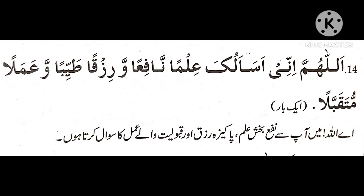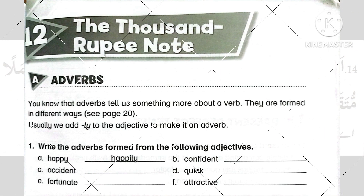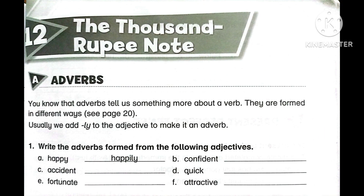Let's start today's lecture with a prayer: Allahumma inni as'aluka ilman nafi'an warizqan tayyiban wa amalan mutaqabbala. This is Unit Number 12, and the name of this unit is 'The Thousand Rupee Note,' from New Oxford Modern English Workbook 4. The first section of exercises is Section A: Adverbs.